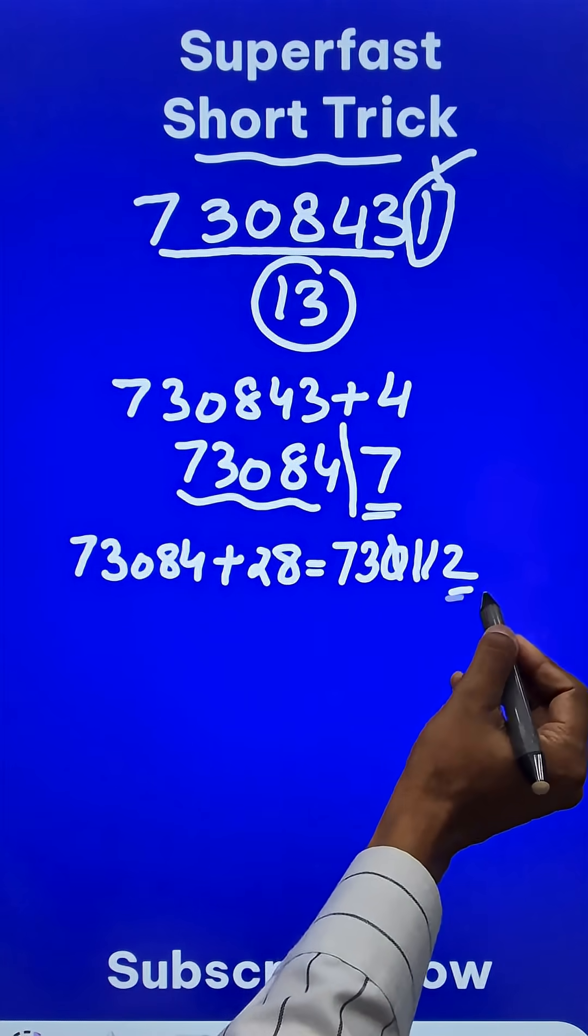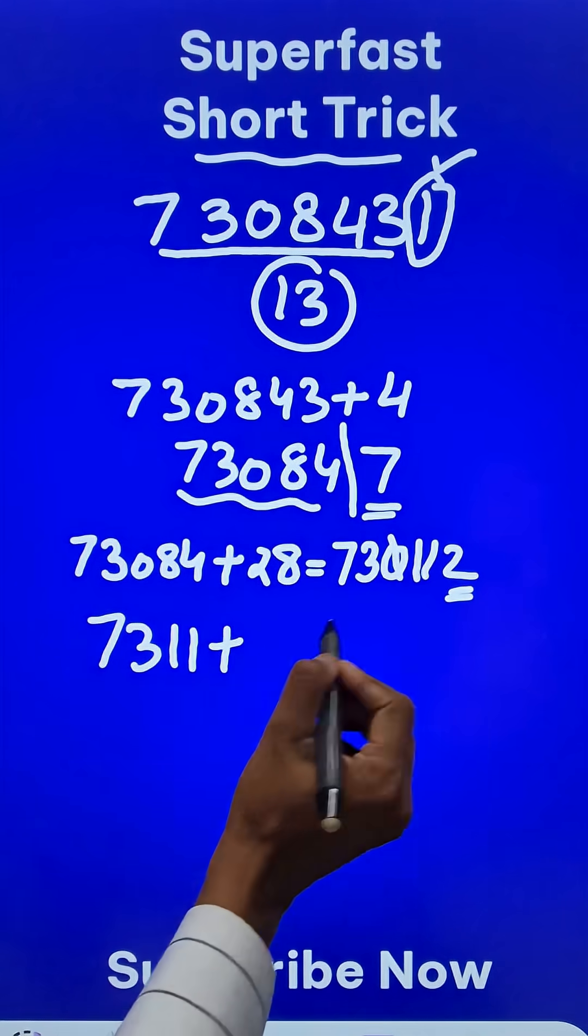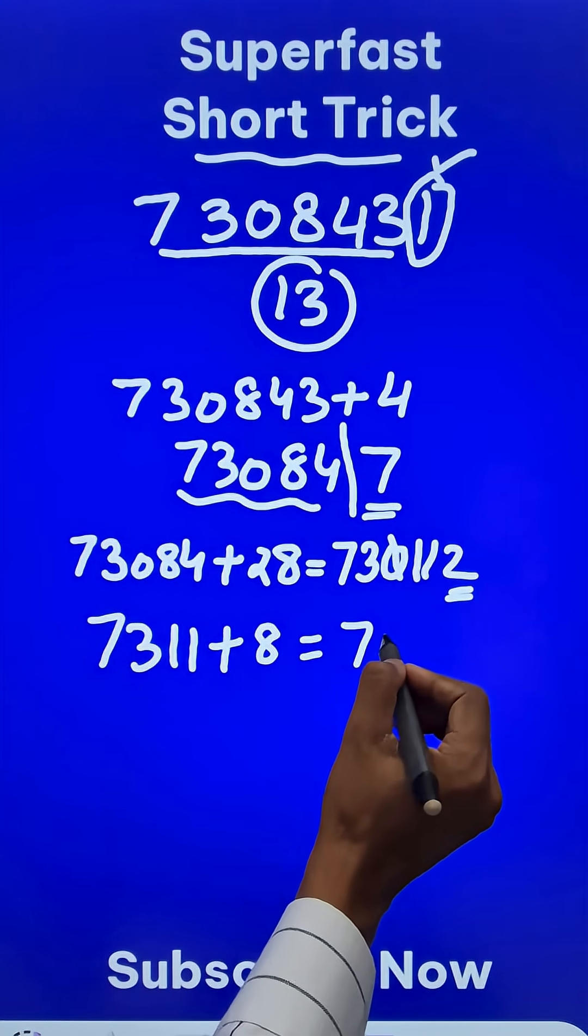73112 and now separate out the last digit. 7, 3, 1, 1 plus 4 times 2 is 8, which gives us 7, 3, 1, 9.